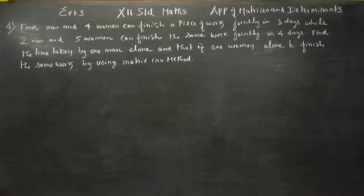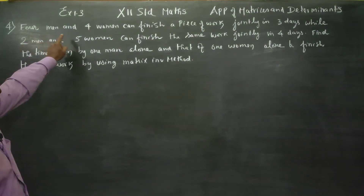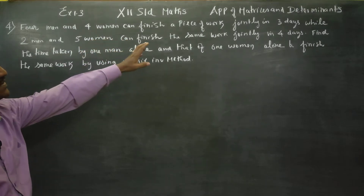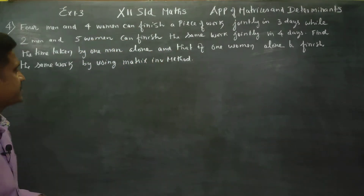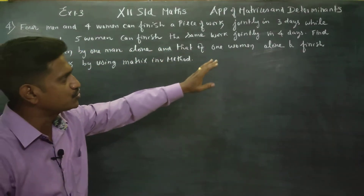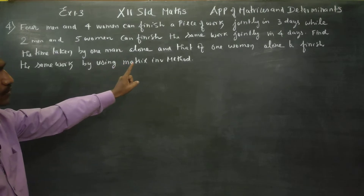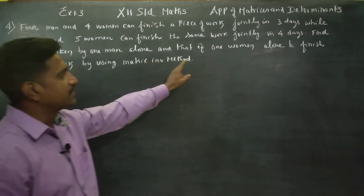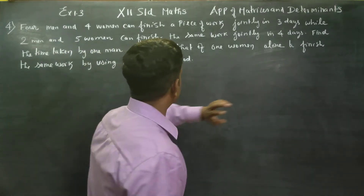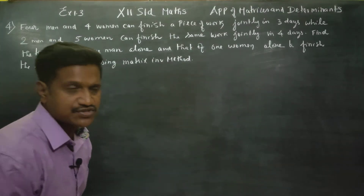Hello 12th standard students. Myself Karanagaran. In exercise number 1.3, sum number 4: 4 men and 4 women can finish a piece of work jointly in 3 days, while 2 men and 5 women can finish the same work jointly in 4 days. Find the time taken by 1 man alone and that of 1 woman alone to do the same work using the matrix inversion method.